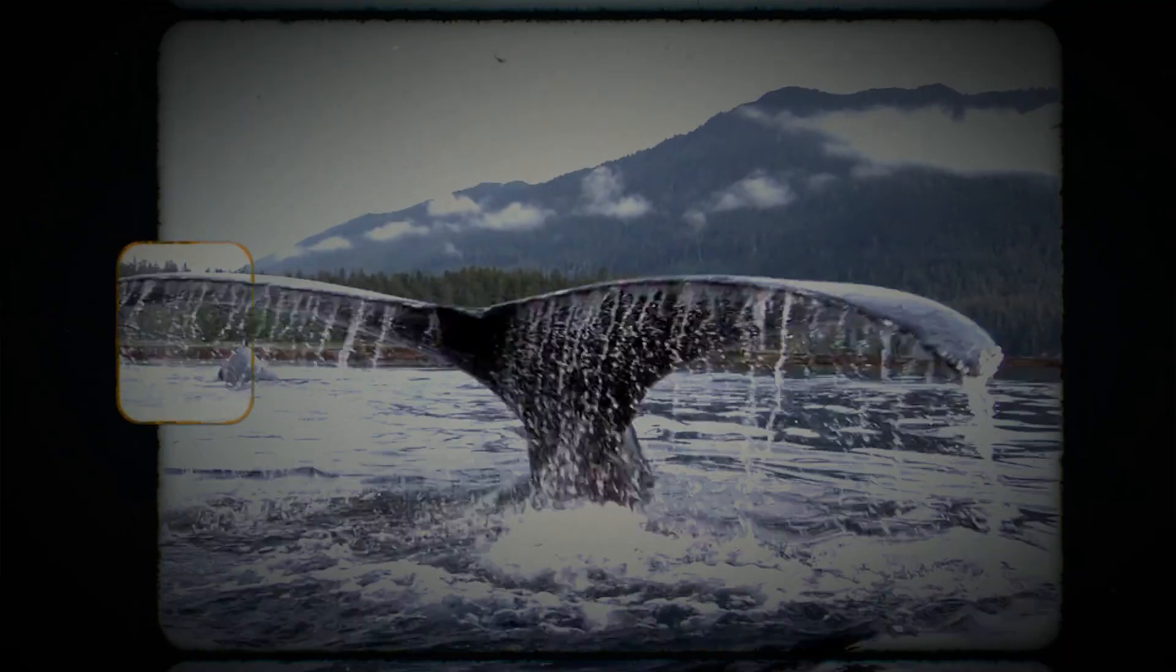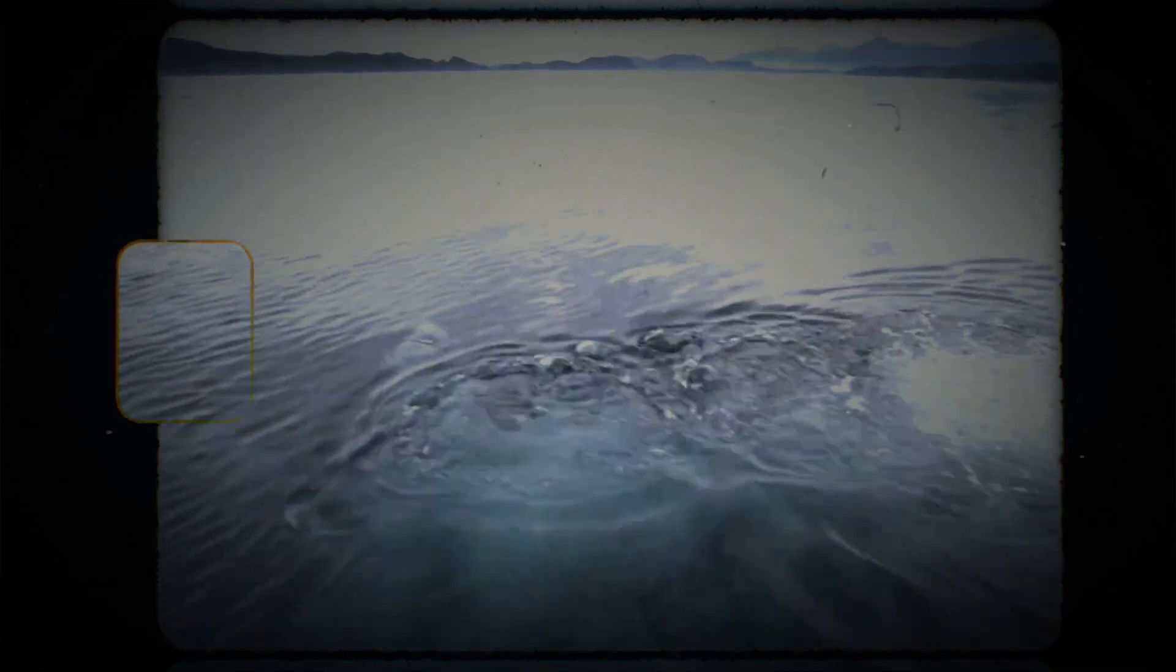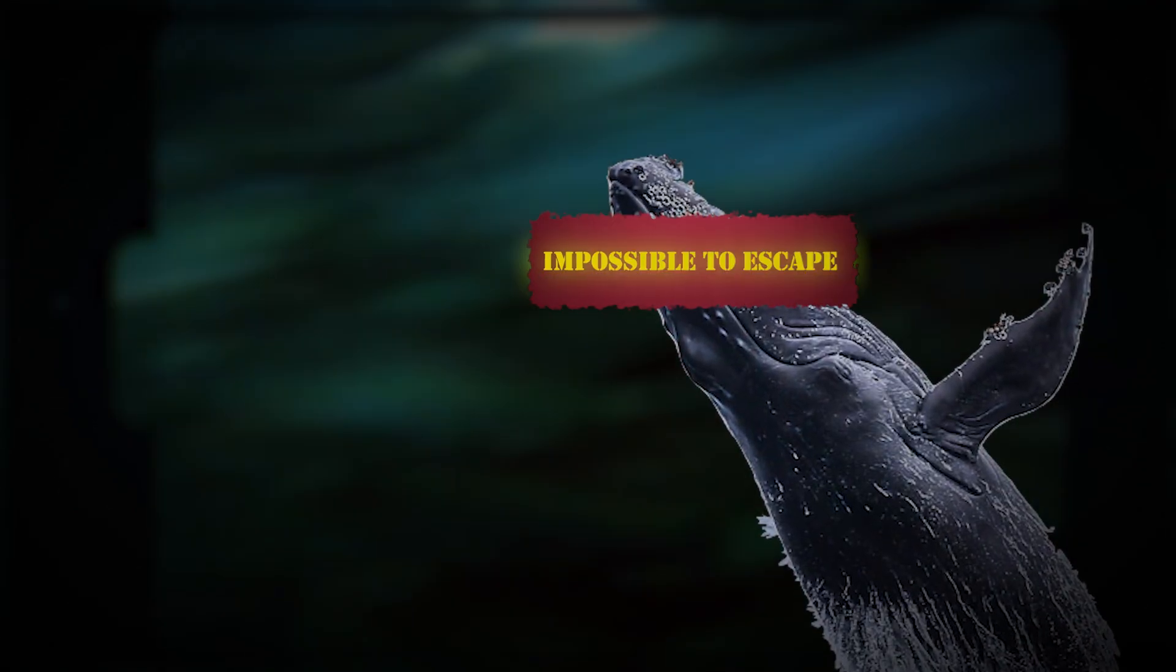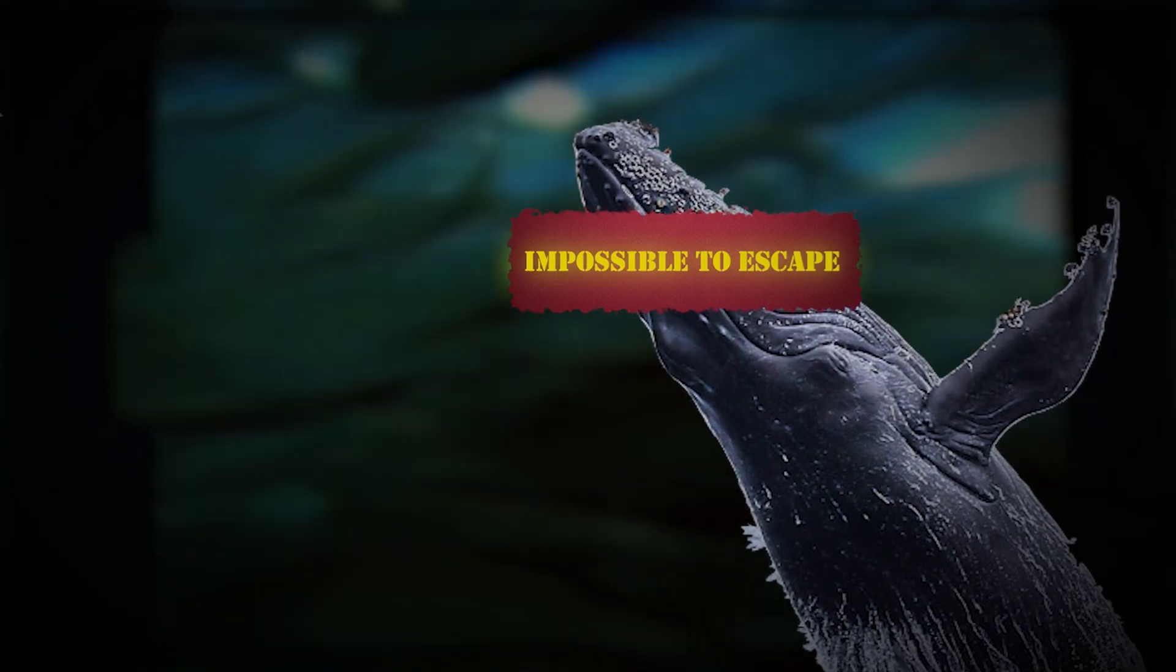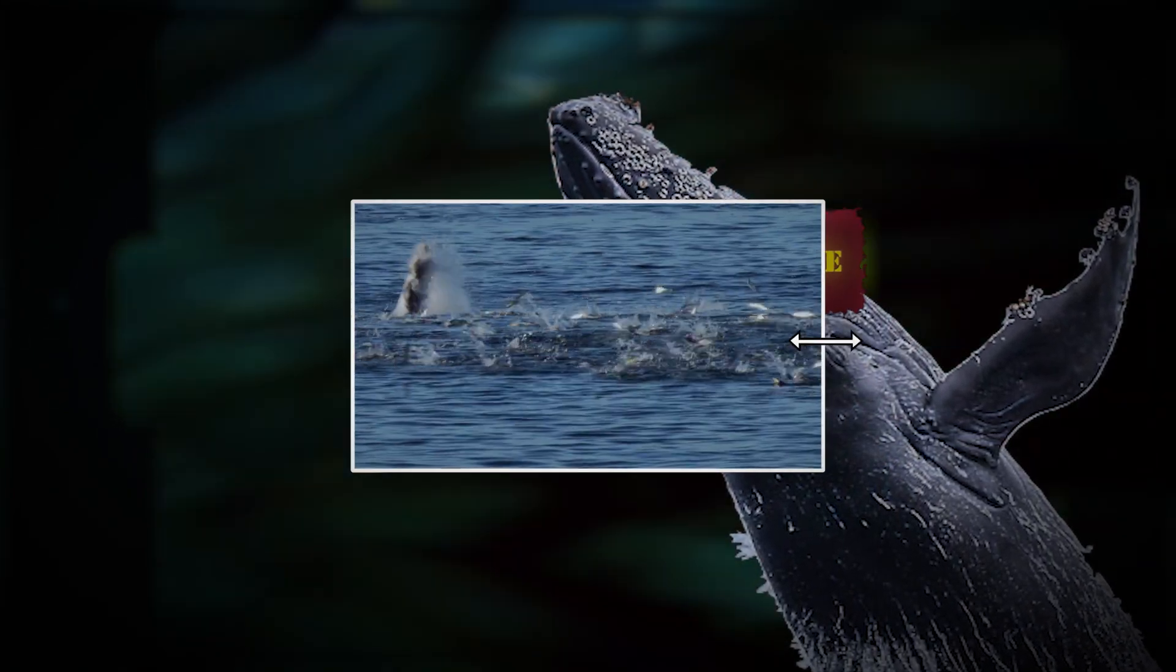Then things get really interesting. The humpback whale starts to blow bubbles, creating a ring-shaped net around the school of fish. As the bubbles rise to the surface, they trap the fish inside. The bubbles act as a barrier, and the fish will not swim through it, making it impossible for them to escape.